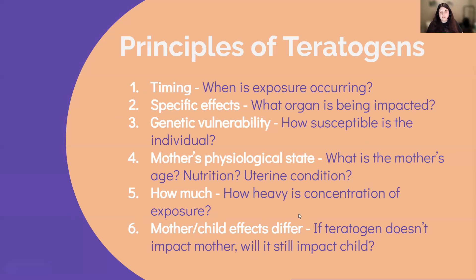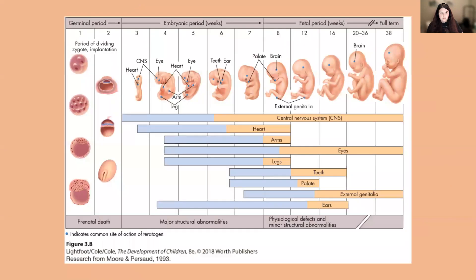These are all things that apply to teratogens and all matter in the scope of what effect teratogens will have on the developing child. There are sensitive periods in prenatal development for the effects of teratogens. In the first two weeks — the germinal period — exposure to a teratogen can result in prenatal death, meaning the zygote won't survive any further.